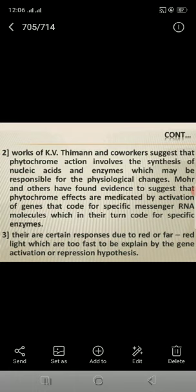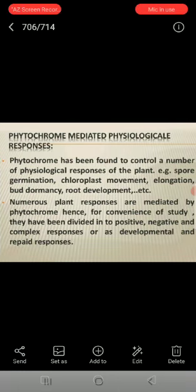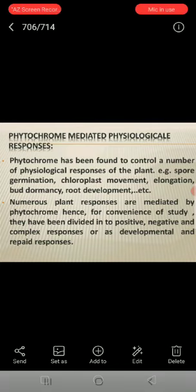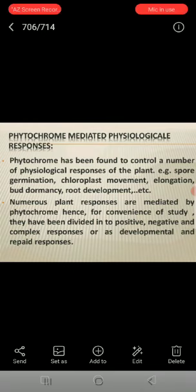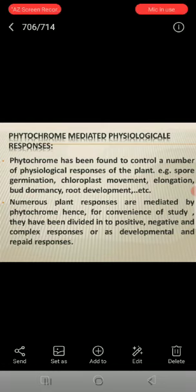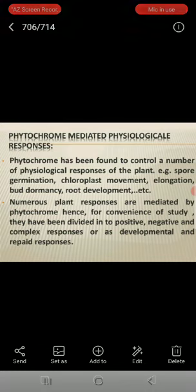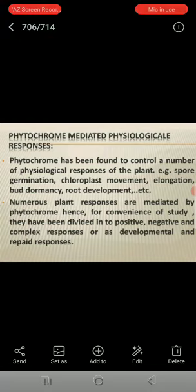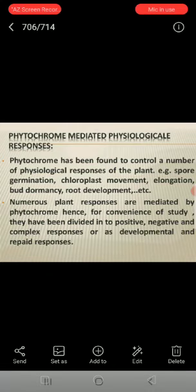There are certain responses due to red or far-red light which are too fast to be explained by gene activation hypothesis. Phytochrome-mediated physiological responses: phytochrome has been found to control a number of physiological responses of the plant, such as spore germination, chloroplast movement, elongation, bud dormancy, root development, etc. Numerous plant responses are mediated by phytochrome. For convenience of study, they have been divided into positive, negative, and complex responses, or developmental and rapid responses.